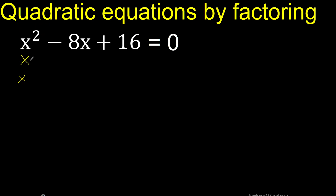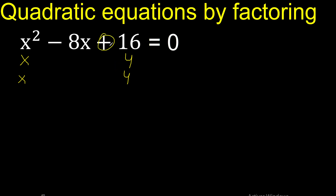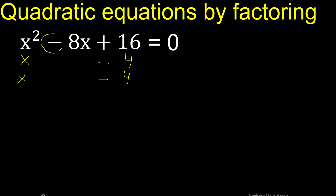x multiplied by x is x squared. We need 2 numbers that multiply to 16. 8 multiplied by 2 is 16, or 4 multiplied by 4 is 16. Let's try 4 plus 4. Plus or minus, minus is plus — let's try minus because here is minus.